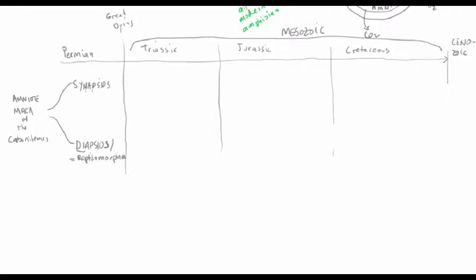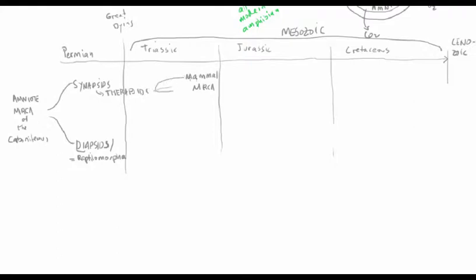Following the synapsid lineage, it's relatively straightforward. From the earliest synapsids in the Carboniferous and Permian, we see diversification. A group called the Therapsida makes the transition across the Great Dying at the Permian-Triassic boundary. The synapsids give rise to the Therapsids, and by the end of the Triassic we have the very first mammals. The mammalian most recent common ancestor emerges from one of the many groups of Therapsids.